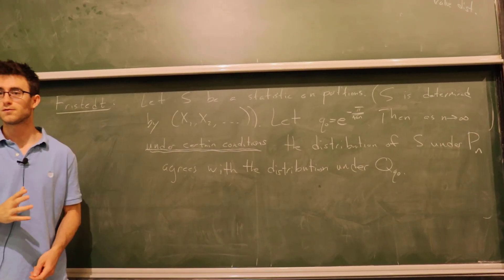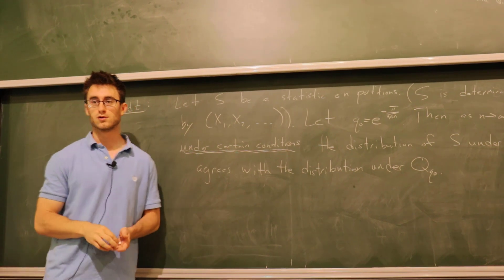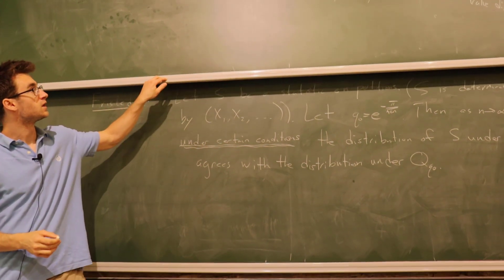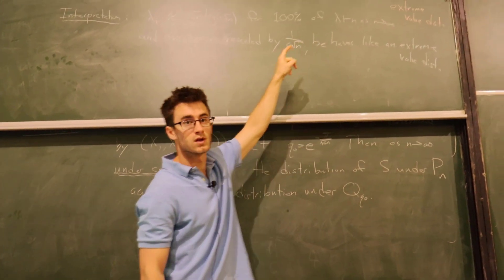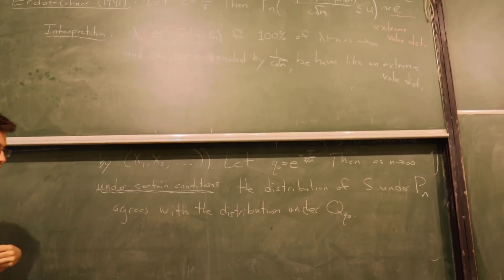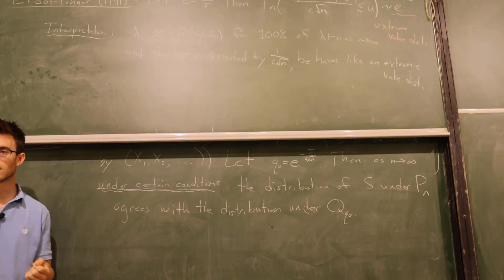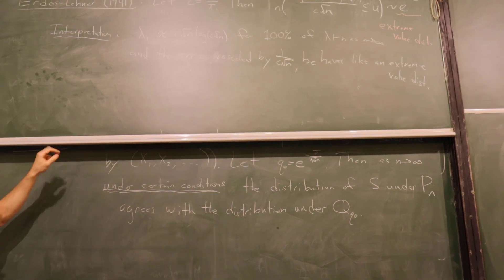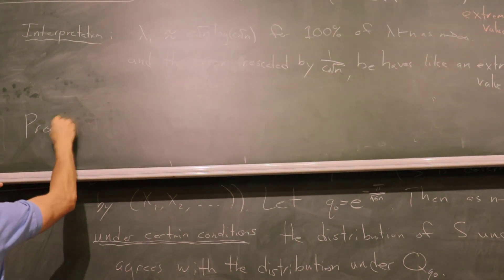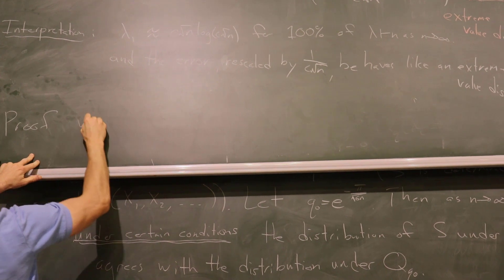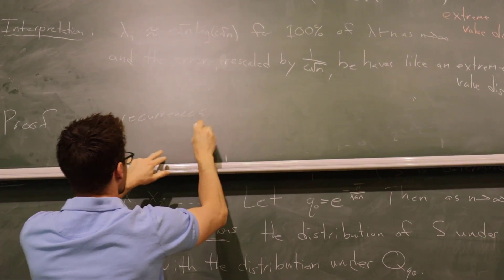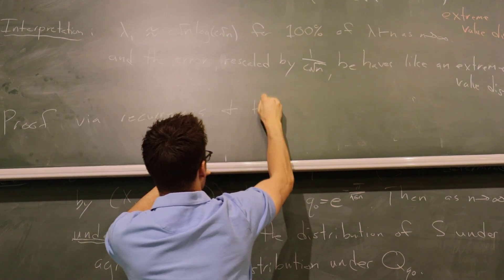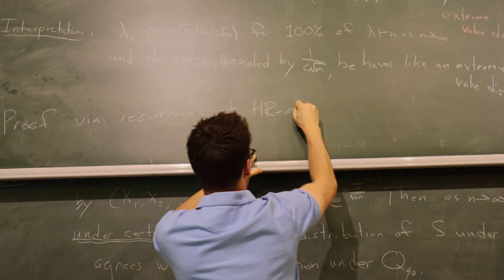This says if I subtract off this root log n thing from lambda, then I get a distribution if I rescale. The interpretation is lambda 1 is approximately this for 100% of partitions of n. Then if you rescale, that error term has a distribution. Lambda 1 is approximately C root n log C root n for 100% of partitions of n as n tends to infinity. The difference in this approximation on the order of root n varies like an extreme value distribution. The error rescaled by 1 over C root n behaves like an extreme value distribution. Erdős and Lehner's proof is completely combinatorial via recursions, recurrences, and the Hardy-Ramanujan asymptotic formula.